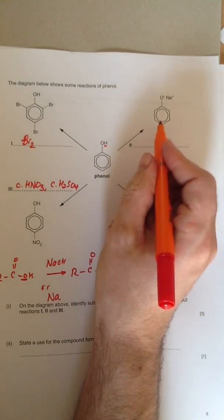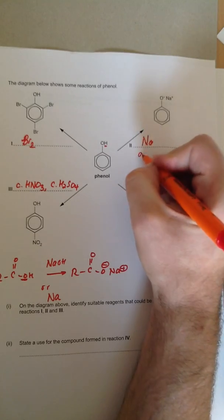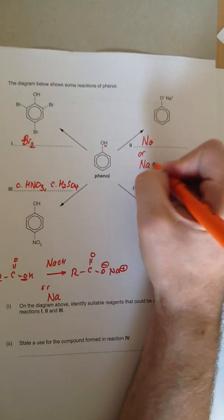So, to go from the phenol to the sodium phenoxide, to remove that proton to deprotonate, you need to add sodium metal, or you can add sodium hydroxide. They're both good answers.